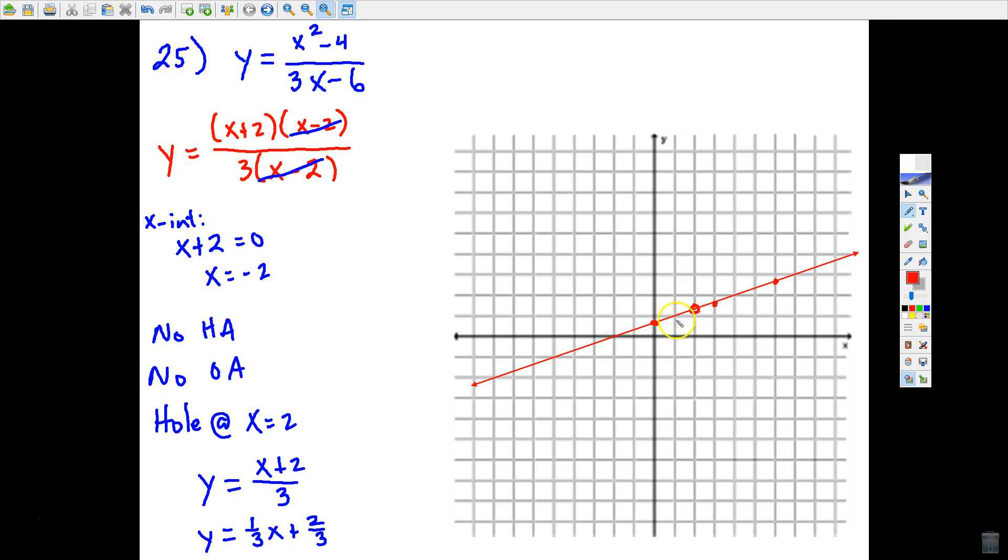And again, I think I've mentioned this before, I can't erase parts of a line, but you could. You could take your pencil and just erase that little piece where x equals 2 on that line. And that's your answer. That is the graph for number 25.